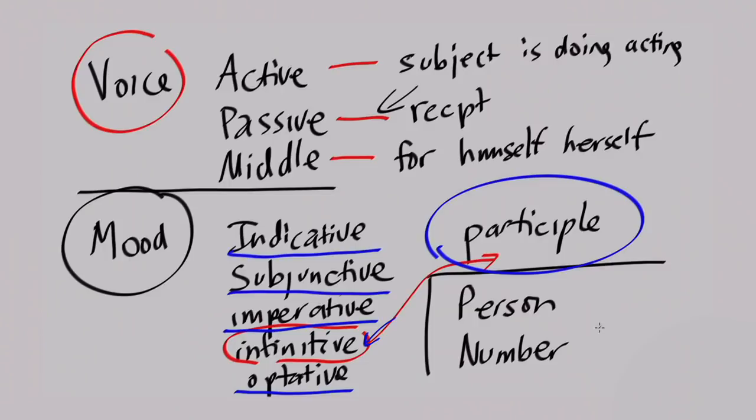In Greek we also have person and number, which is quite simple. Person is first, second, and third person. Number basically gives you singular, plural, and neuter or neutral. So that's pretty much the most basic — it's on one page. That wasn't that bad. I'm not asking you to learn Greek, but if you stick around long enough, it's just going to rub off on you.